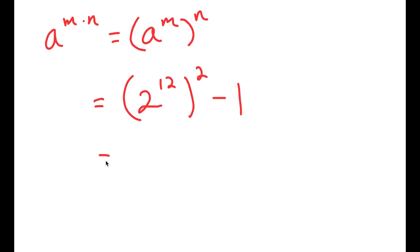Now, I'm going to rewrite 1 as 1 squared. So now I have 2 to the power of 12 to the power of 2 minus 1 squared.